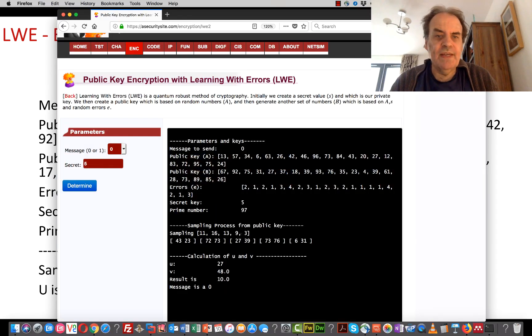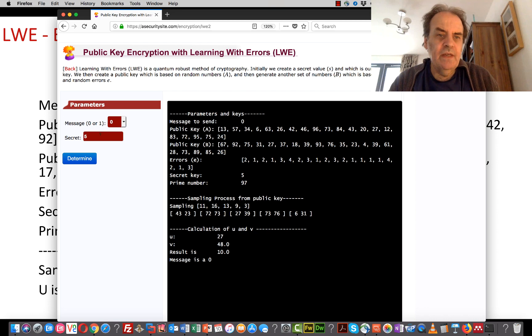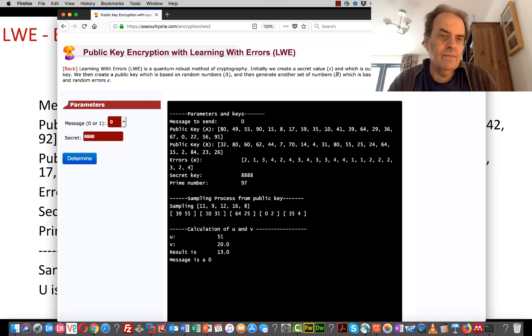Let's see this working for real. We'll take a secret value and a message of 0, with secret value 8. You can see it's generated an A value for us, then generated B based on A, the errors—these are random errors—and the secret key. We never get a value greater than 97 from our B or A values.